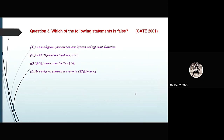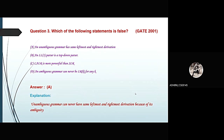Now question number 3: which of the following statements is false? Option A: an unambiguous grammar has the same leftmost and rightmost derivation. Option B: an LL(1) parser is a top-down parser. Option C: LALR is more powerful than SLR. Option D: an ambiguous grammar can never be LR(k) for any k. This question came from GATE 2001. The correct option is A, because an unambiguous grammar can never have the same leftmost and rightmost derivation due to its unique parse trees.